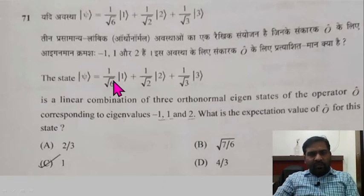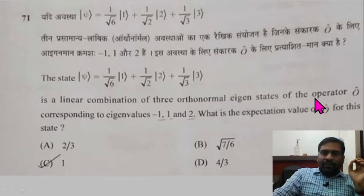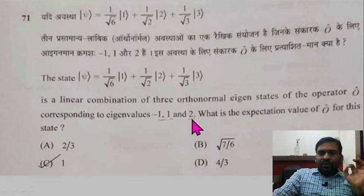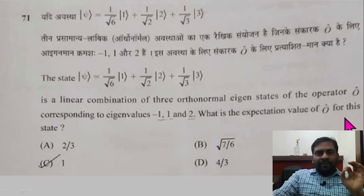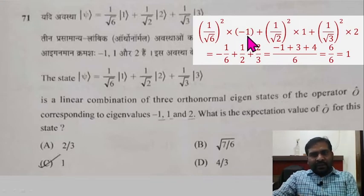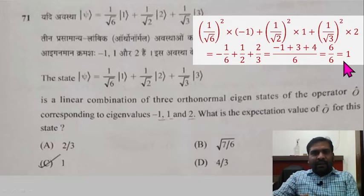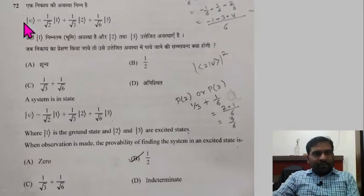Question 71: The state ket |ψ⟩ = (1/√6)|1⟩ + (1/√2)|2⟩ + (1/√3)|3⟩ is a linear combination of three orthogonal eigenstates of operator O corresponding to eigenvalues −1, 1, and 2. What is the expectation value of the operator? Simply take (1/√6) squared times (−1), plus (1/√2) squared times 1, plus (1/√3) squared times 2. Solving this gives the expectation value equal to 1.